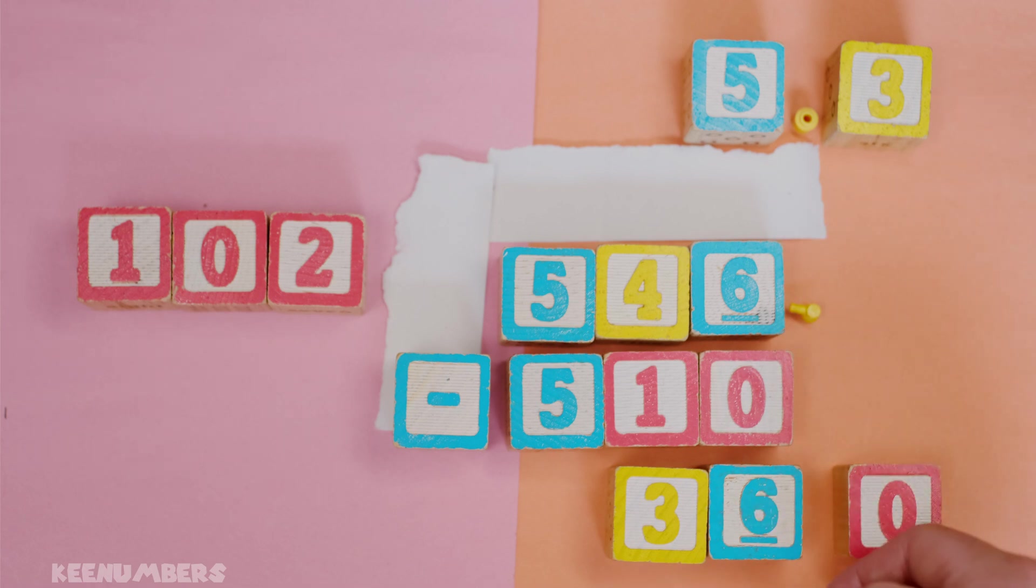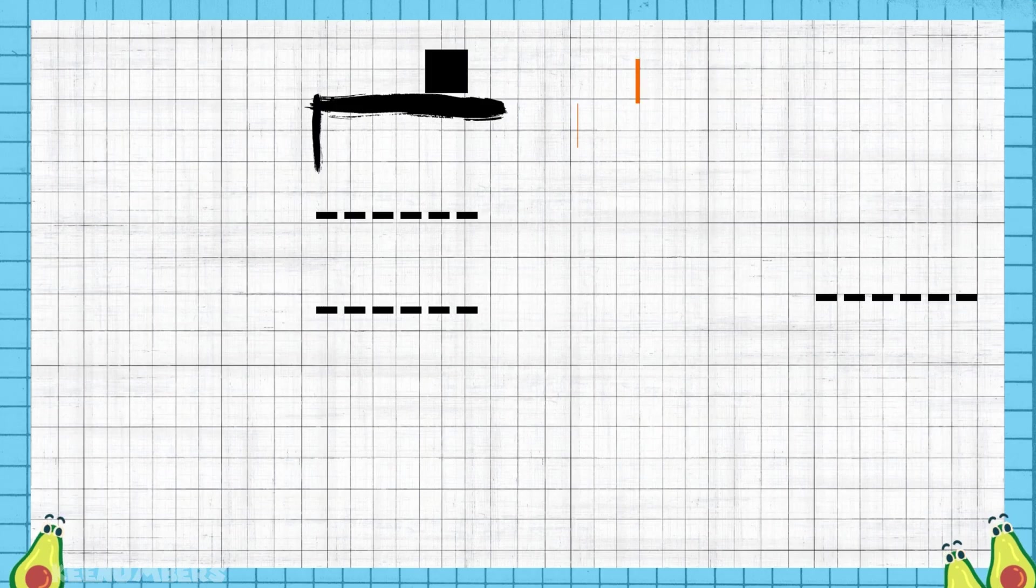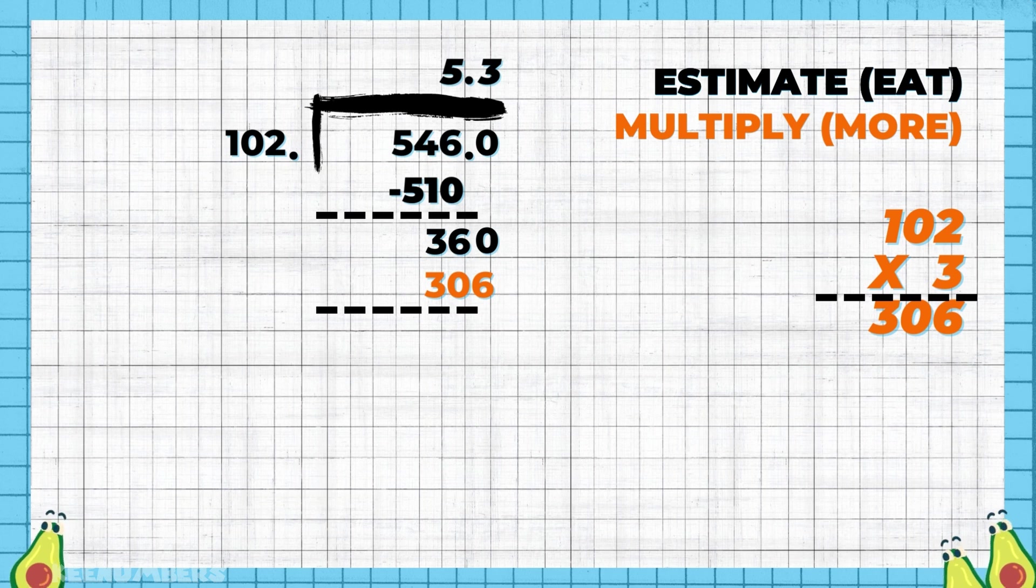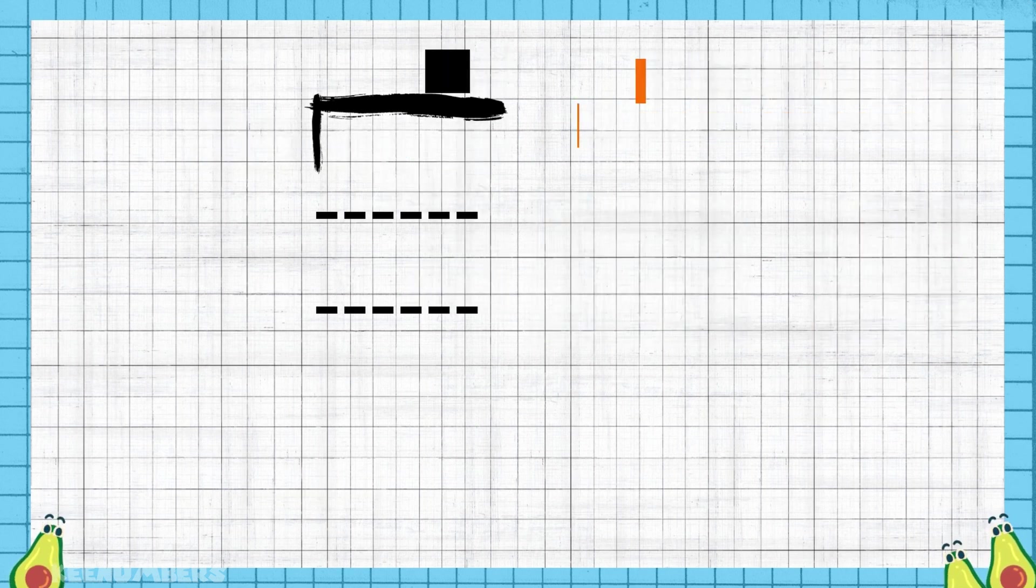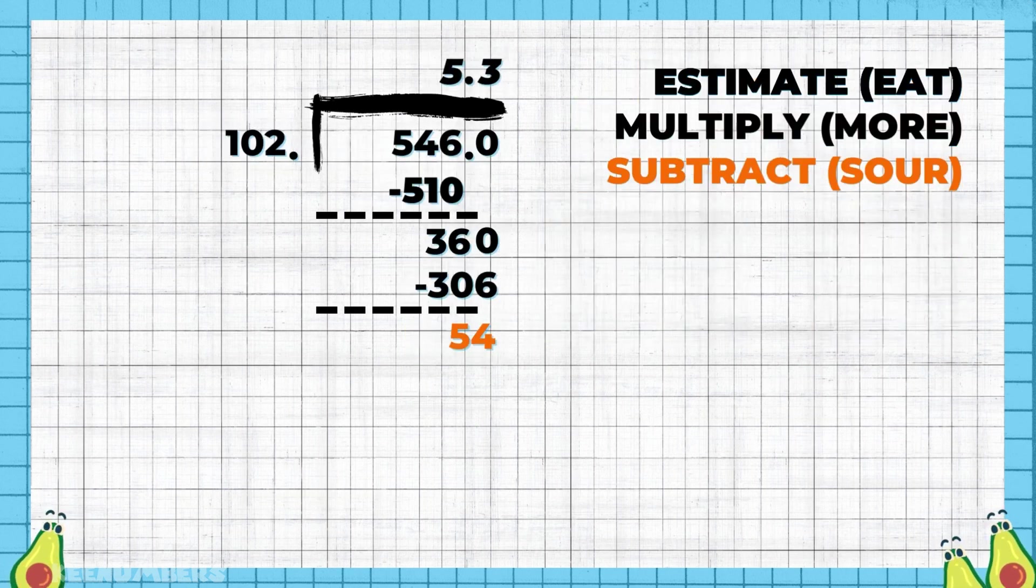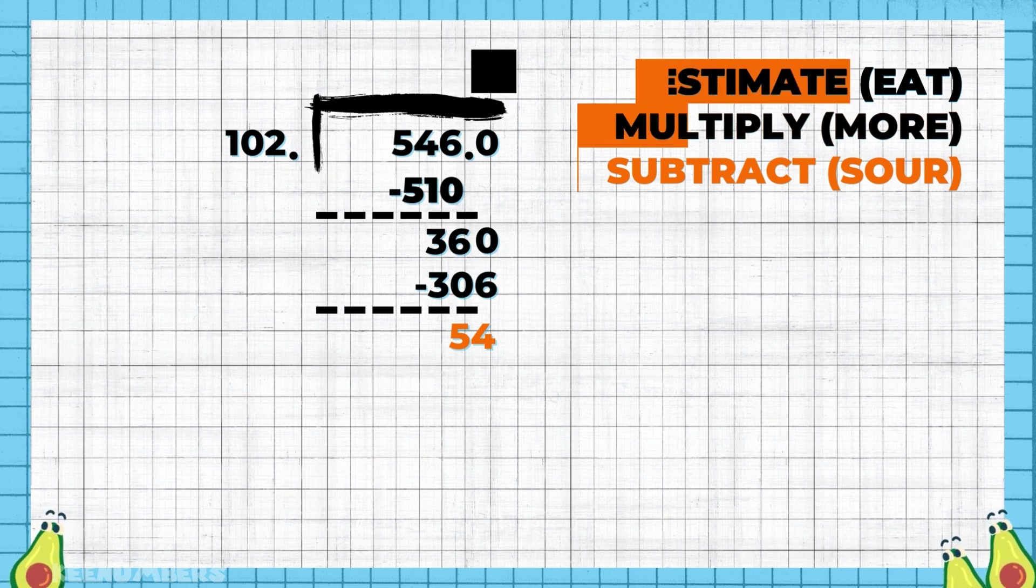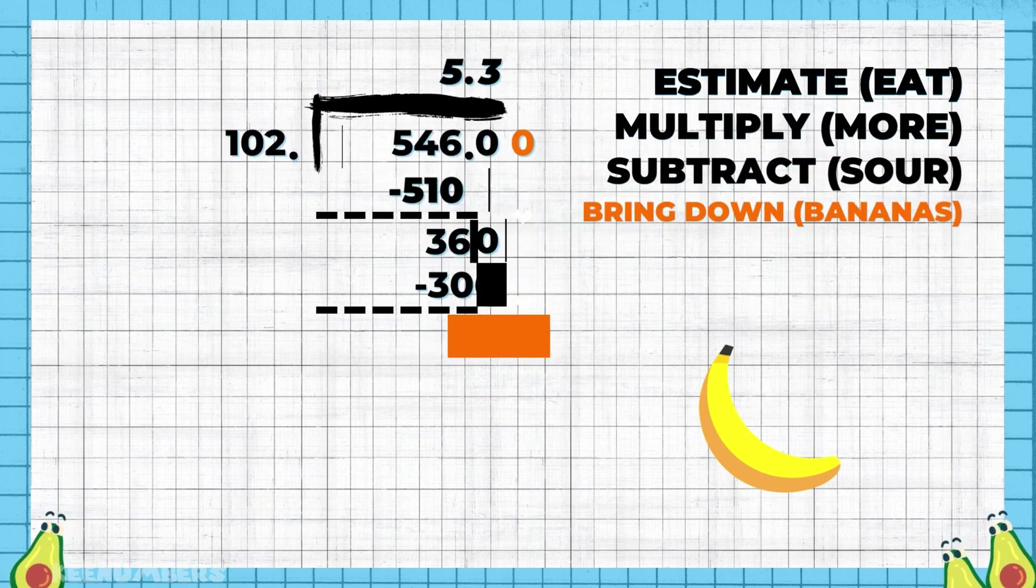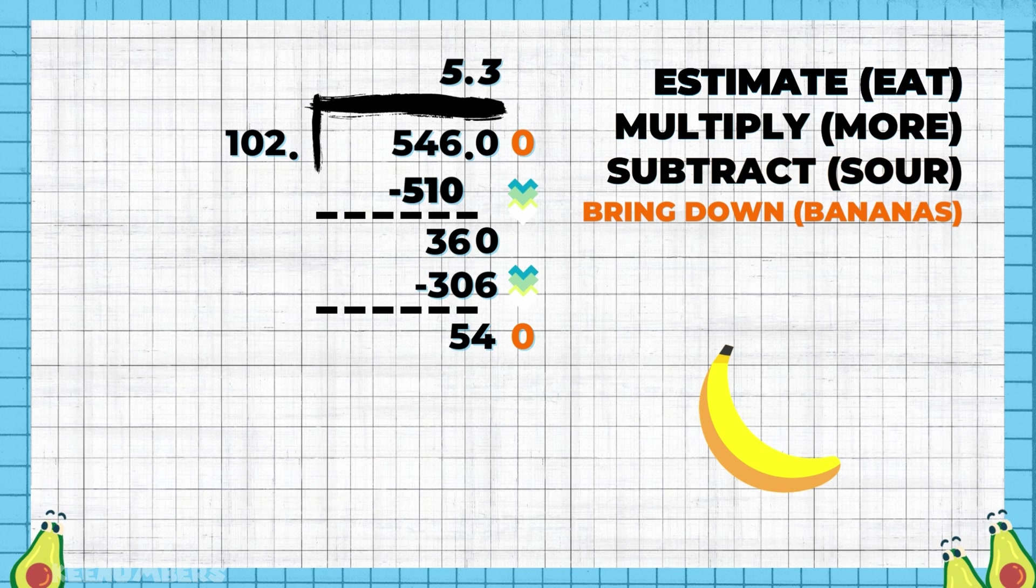We already did the first part of this long division process with the blocks. Now we're going to continue. Multiply three by 102 and that's how we got 306. Then you subtract - eat more sour. The difference of 360 and 306 is 54. Then you bring down the bananas, because 546 is the same thing as 546.0 or 546.00 - you can add as many zeros as you want.